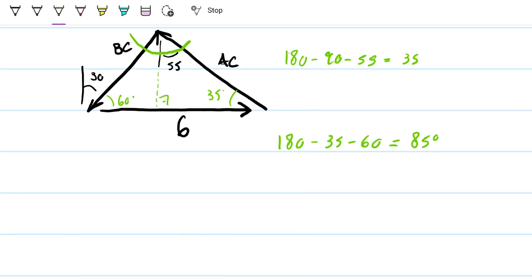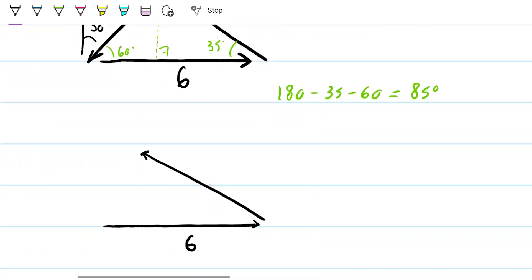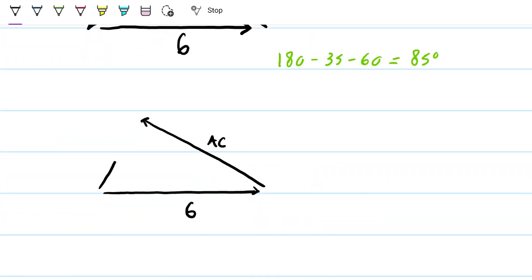Now last but not least, I'm going to redraw this one more time. I'm going to have the big one here, that's my 6 here. And I'm going to have another one here, that's my AC here. And I'm going to have another one here that is my BC. And what I have here is the 85. What I have here is my 60. What I have here is my 35.